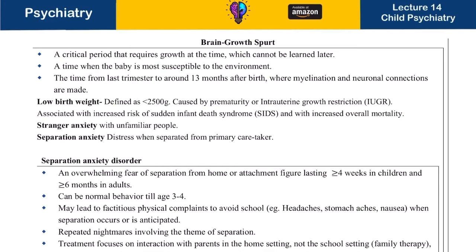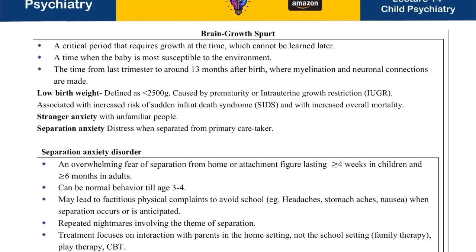Brain growth spurts are important — if a spurt is supposed to happen and doesn't, those skills cannot be gained later. For example, if a child uses drugs at ages 12 to 14, this will permanently affect brain growth. This is the time when a child is most susceptible to the environment. Different disorders are related to brain growth spurts, such as low birth weight defects and learning disorders.